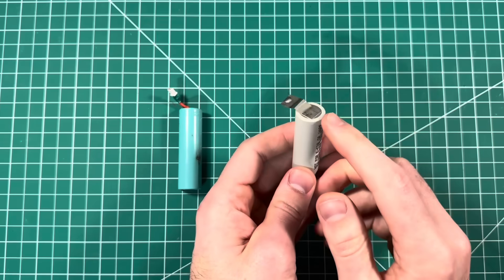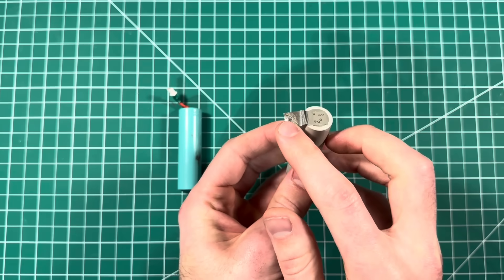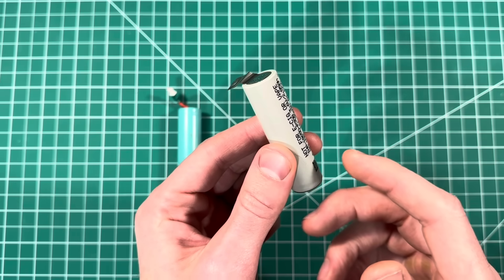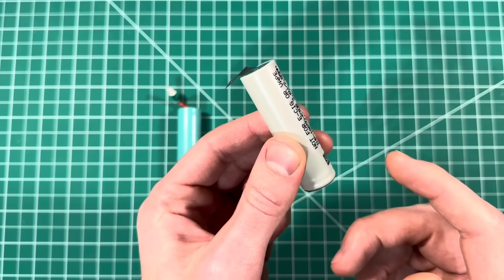It's recommended to spot weld tabs onto the ends and then you can solder to the tabs to add the plugs. There are plenty of tutorial videos out there, just make sure to do your research because these batteries are the real deal.